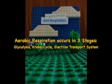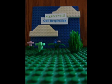Aerobic respiration occurs in three stages: glycolysis, the Krebs cycle, and the electron transport system.